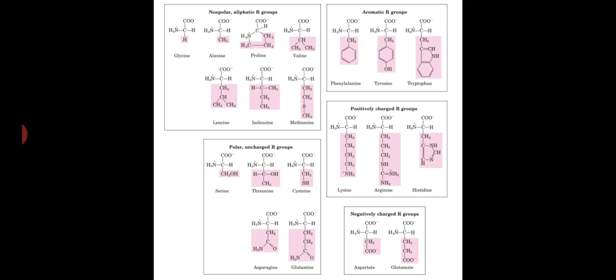This group includes serine, threonine, cysteine, asparagine, and glutamine. Polarity of serine and threonine is contributed by their hydroxyl groups, that of cysteine by its sulfhydryl group, and that of asparagine and glutamine by their amide groups.